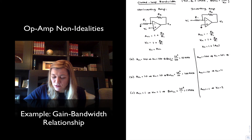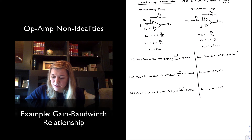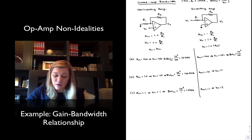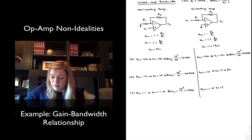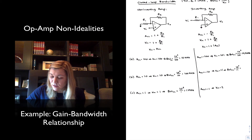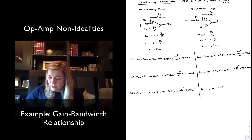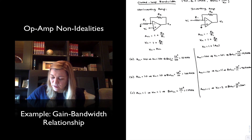For the inverting amplifier, the closed-loop bandwidth in the first case is 10 to the 6 divided by 101, which is approximately 9.9 kHz. In the second case it is 10 to the 6 over 11, which is about 90.9 kHz. And finally, the closed-loop bandwidth is 10 to the 6 divided by 2, which is 500 kHz.